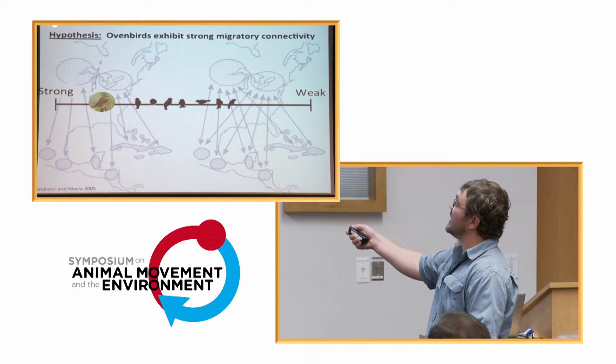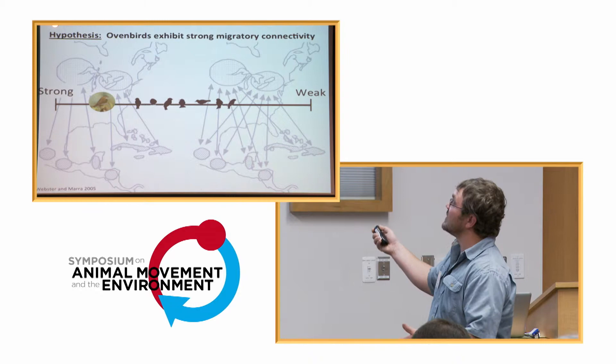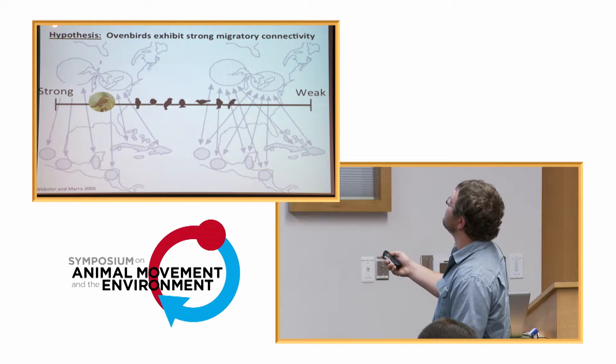It's important to note that connectivity isn't just black and white — weak or strong. There's a gradation of connectivity, and we predict that oven birds have strong-ish connectivity.